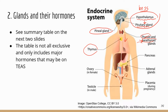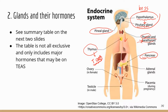Moving down, we have the thymus. You do not need to know the specific hormones secreted by the thymus — you only need to know that it secretes hormones that stimulate the maturation of T-cells. Remember from the immune system chapter that T-cells mature in the thymus. Next is the pancreas, which secretes hormones that regulate glucose levels.